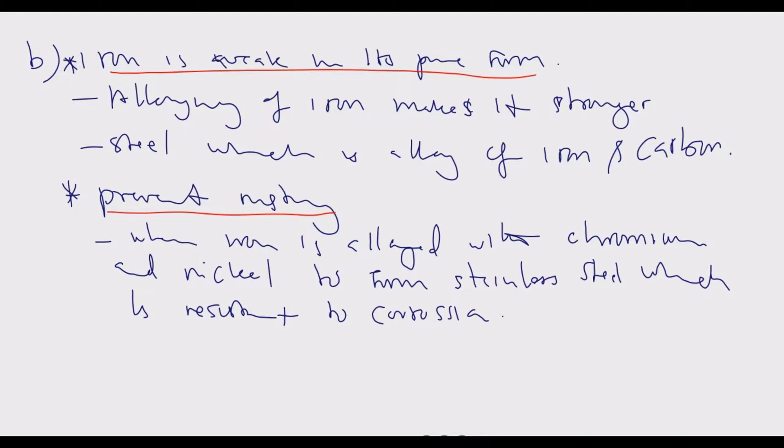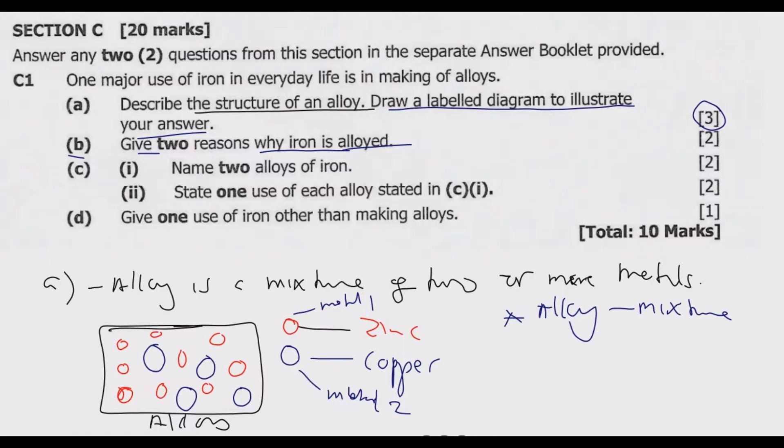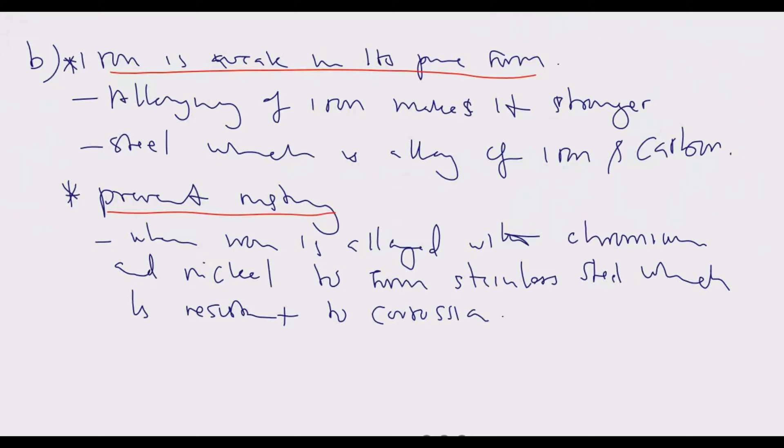Question C, name two alloys of iron. We've talked about these already. We've talked about stainless steel and steel, which is the combination of iron and carbon. Then we've got also stainless steel, which is a combination of iron, chromium, and nickel.